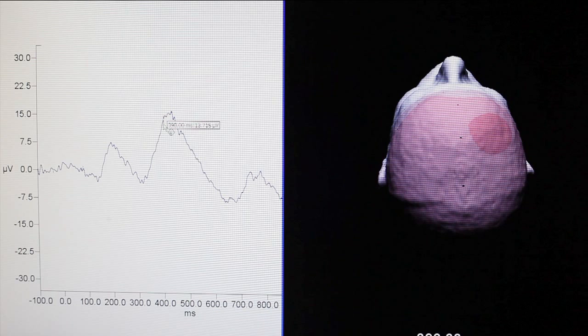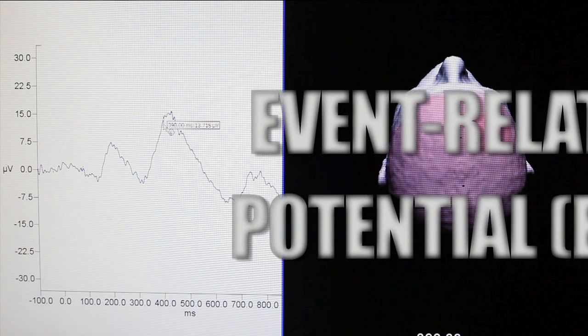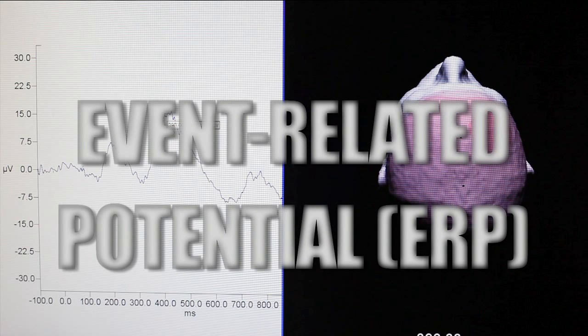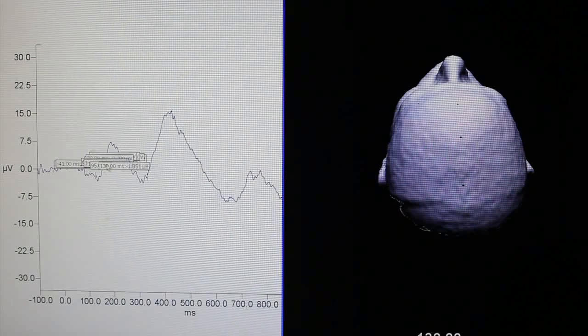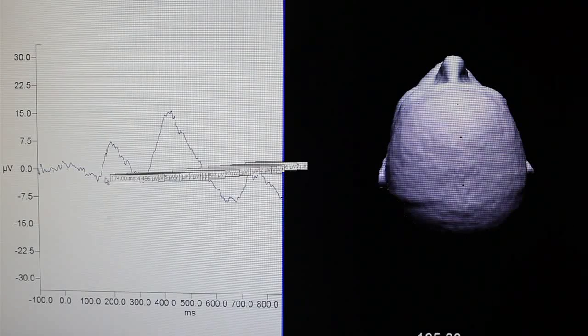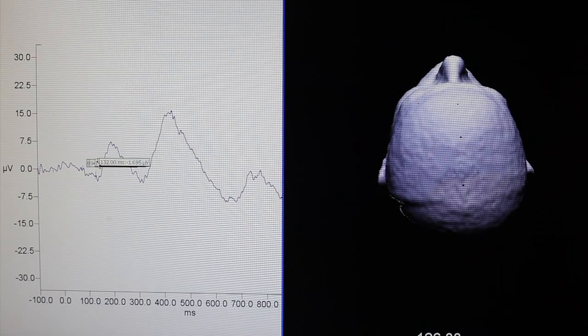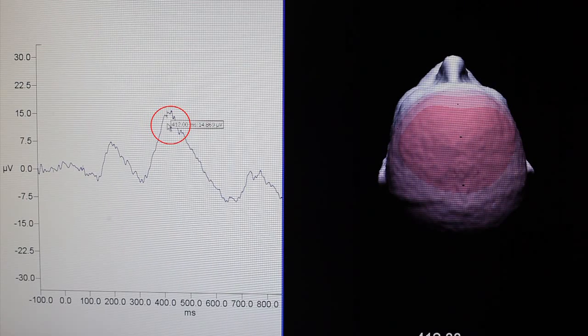Another approach is to view the data from one electrode at a time. In this example, we're seeing the response of a single person viewing a brand logo. This type of data is called an event-related potential, or ERP. The entire trace lasts less than a second. The brand is presented here. And we can see a strong response or potential in this part of the brain at about 300 milliseconds after the brand is presented.